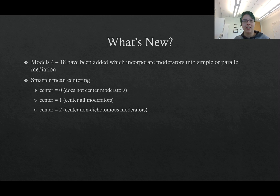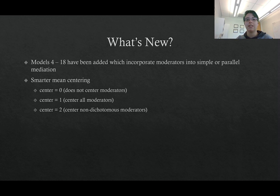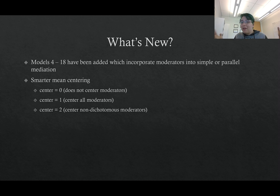So what's new in this new version of MEMORY? This is version three. Version one included just mediation; version two added moderation. So, surprise surprise, version three includes moderated mediation — and I'm really excited about this. This has been a culmination of a lot of work. There are now models four through 18 in MEMORY, and the model numbering system is modeled after PROCESS, which is a tool that lots of folks are familiar with for doing mediation and moderation analysis in between-subjects designs. Basically what we've done is added a number of models that can incorporate one moderator into a simple or parallel mediation model.